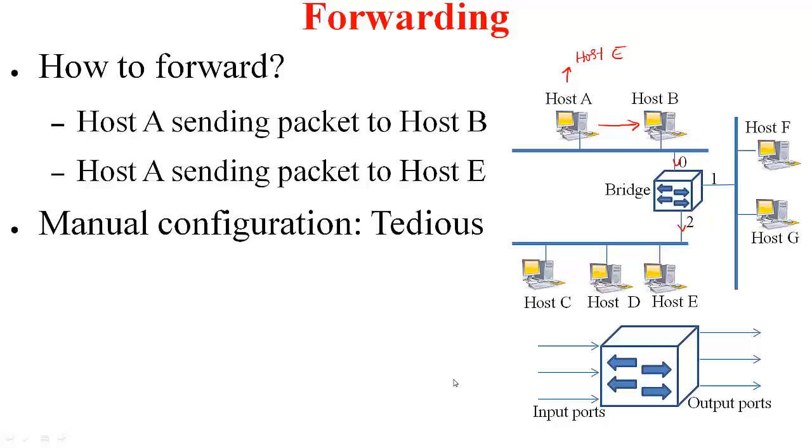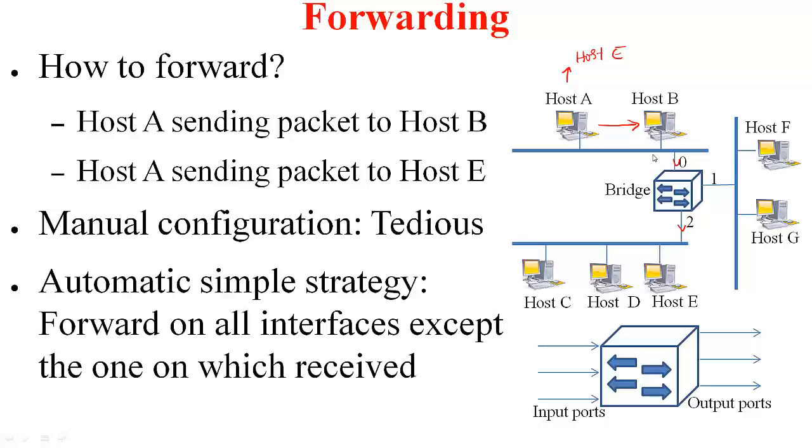So what is one very simple thing the bridge can do to ensure that the packets reach the intended destination? Note that this need not even be efficient. So here is what it can do. Whenever it receives a packet on a given port, you just send it out on all the other ports except on the port in which it was received. For example, when host A send a packet to host B, it received it on port 0, you send it out on port 1 as well as port 2.